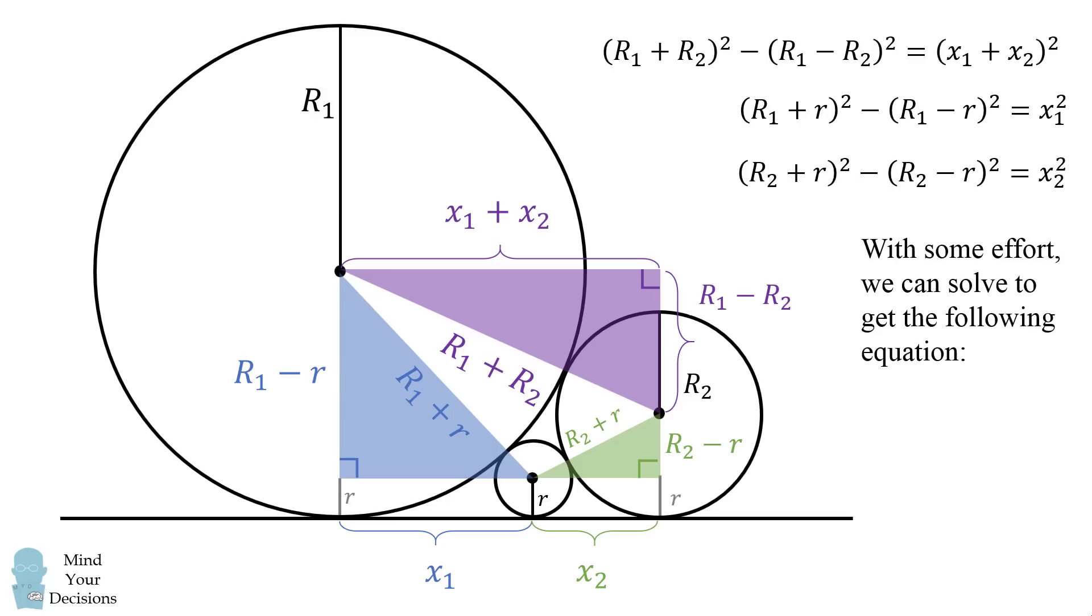Now, with some effort, we can solve for r, little r that is, and we'll get the following equation. 1 divided by the square root of r is equal to 1 divided by the square root of r1 plus 1 divided by the square root of r2. And like magic, we figured out an equation that we can solve for little r, regardless of the values of big r1 and big r2.